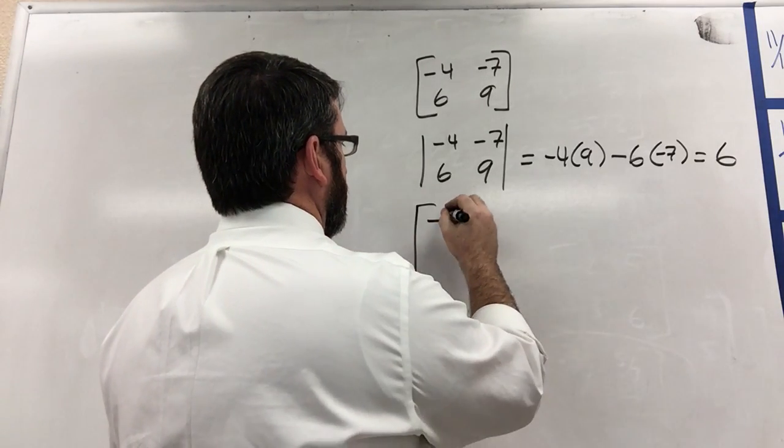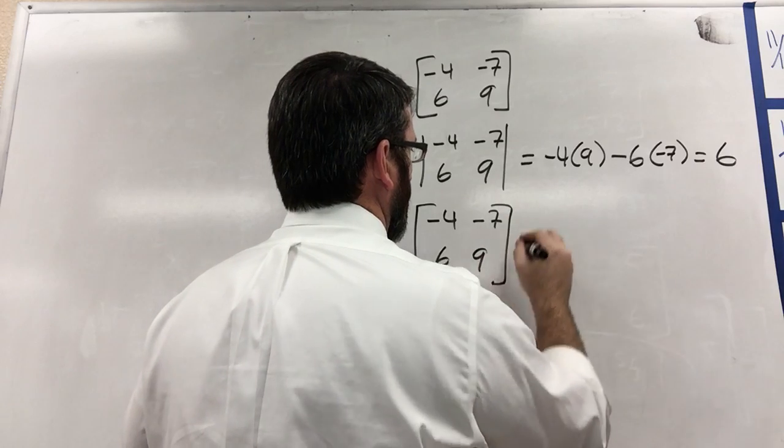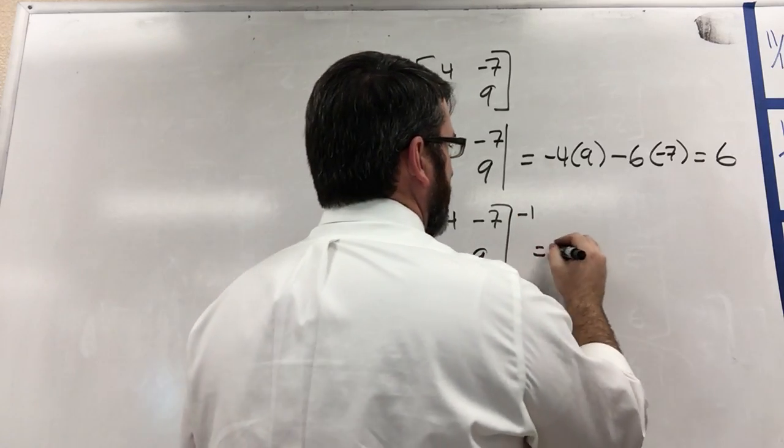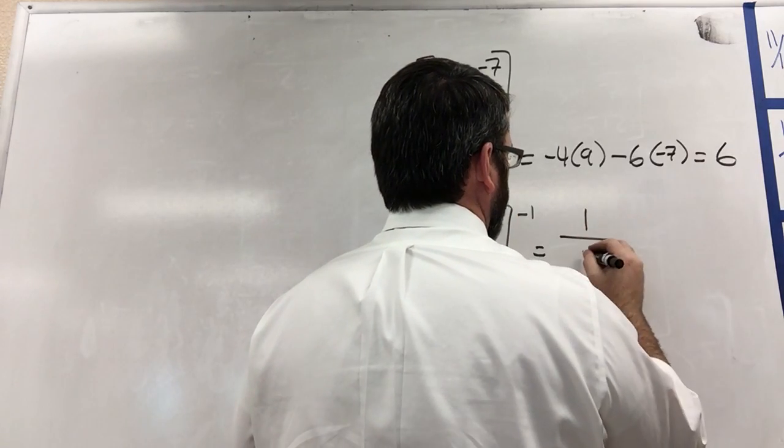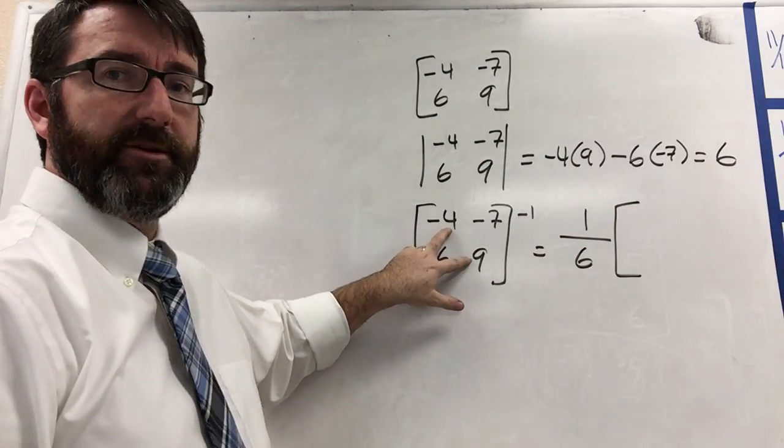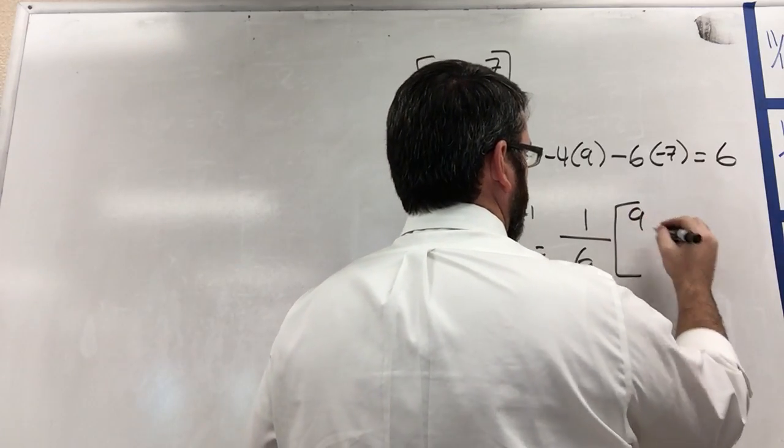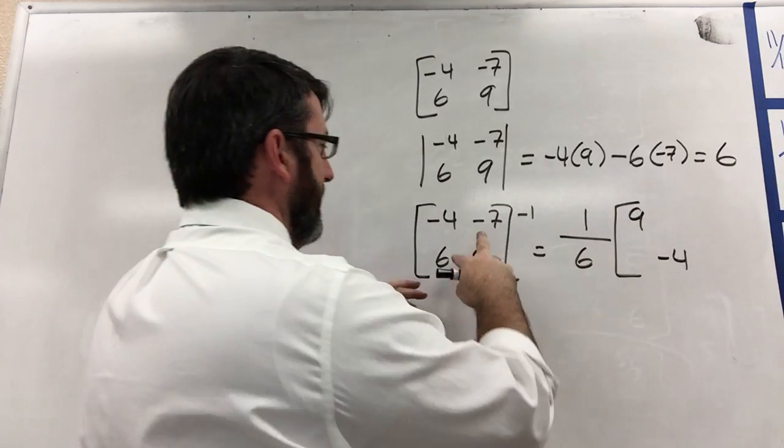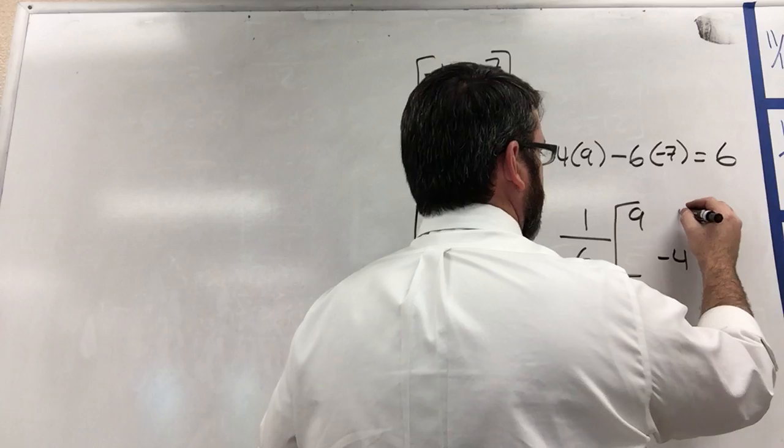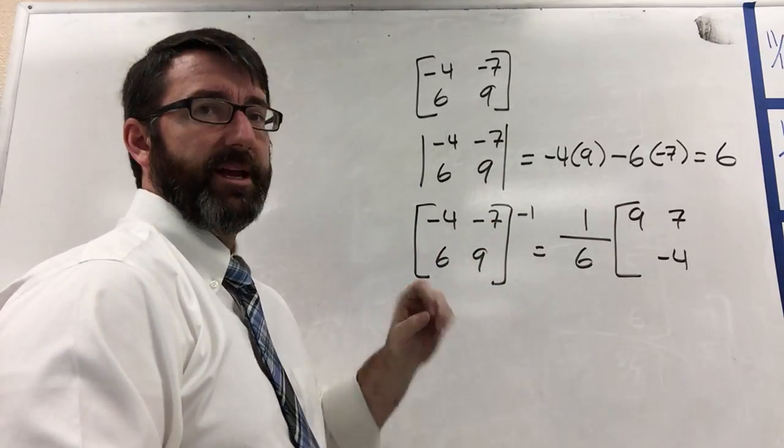So the inverse of this matrix is going to be equal to 1 over the determinant times this matrix, but with these two entries flip-flopped. So we're going to have a 9 here and negative 4 here, and then these two entries stay where they're at, but the signs change. We're going to multiply each of them by negative 1.